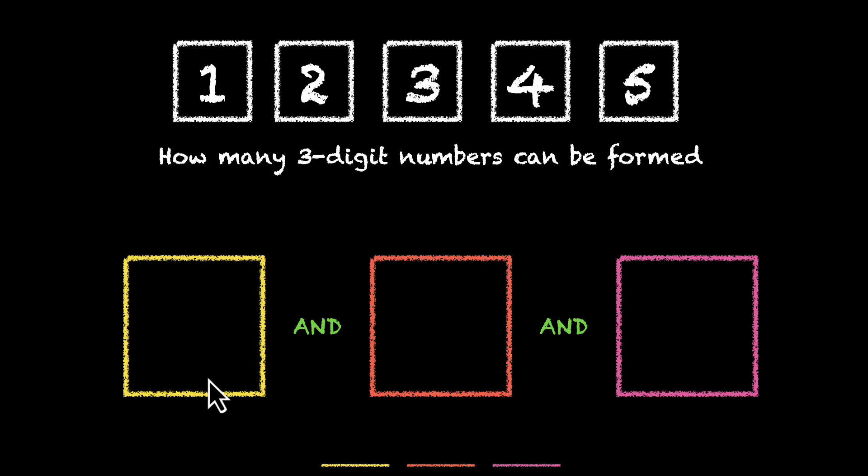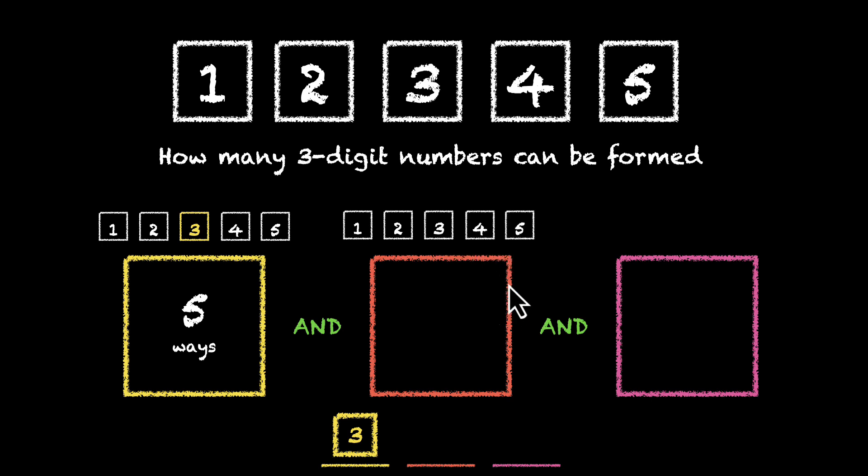For the first one, we have 5 options: 1, 2, 3, 4 and 5. So we can finish this part of the job in 5 ways. Let's move to the next one. How many ways do we have here? Well, whatever number we pick. Let's say we pick 3. 3 comes here. Whatever number we pick, that number still is available for this orange box. So even this box has 5 ways: 1, 2, 3, 4, 5. So we can do this part of the job again in 5 ways.